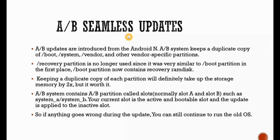Next, we'll see what is AB updates. There are two types: seamless update and streaming update. AB updates are introduced from Android Nougat onwards. An AB system keeps a duplicate copy of boot, system, vendor, and other vendor-specific partitions — there will be two copies. Recovery partition is no longer used separately since it was very similar to the boot partition; now recovery will be part of your boot partition itself. There is no separate recovery image or recovery partition. Keeping a duplicate copy of each partition will definitely take up storage memory by two times.